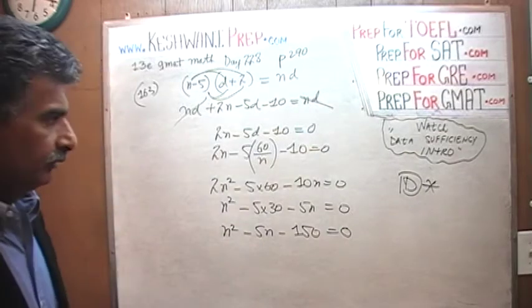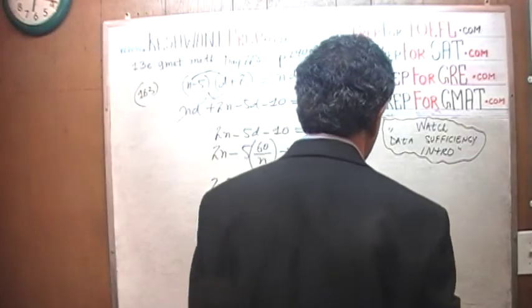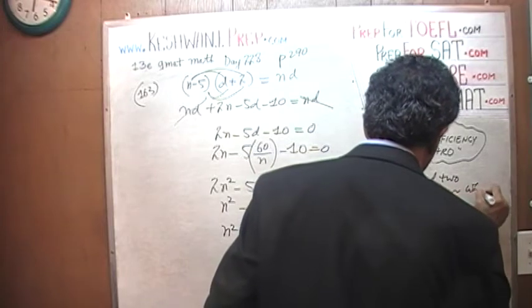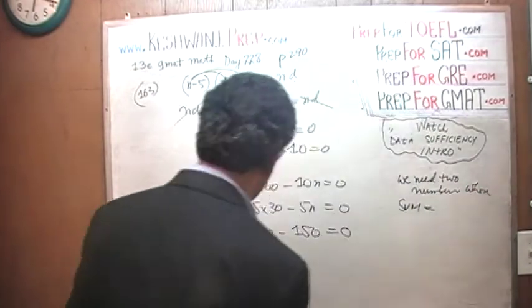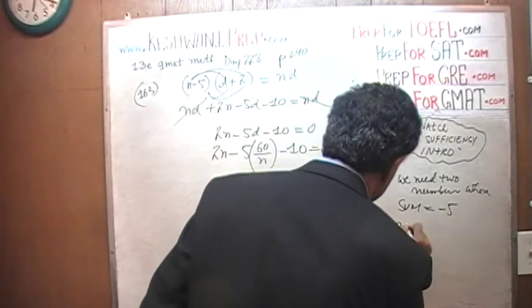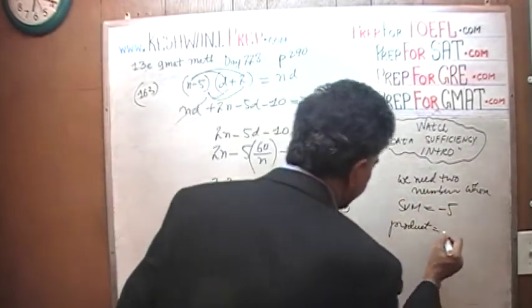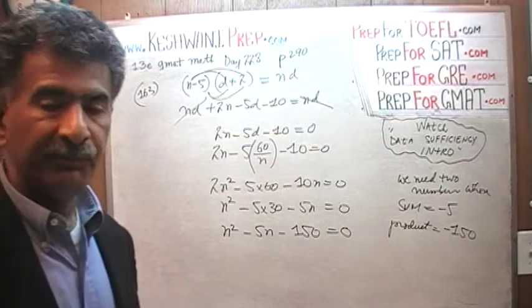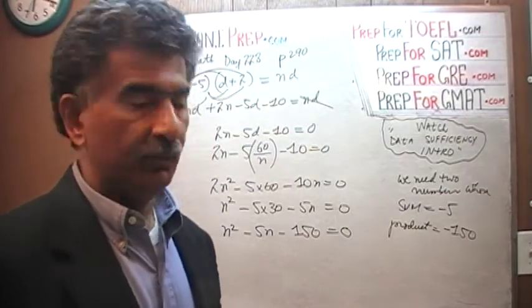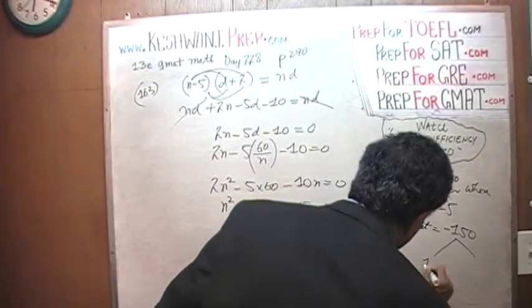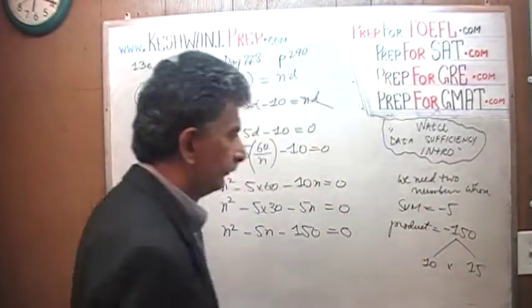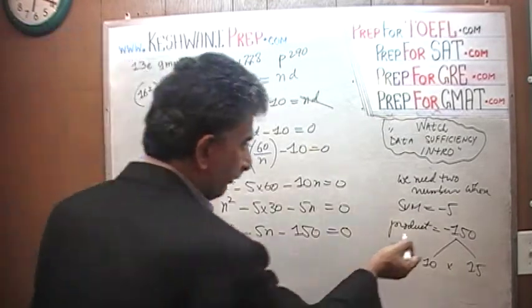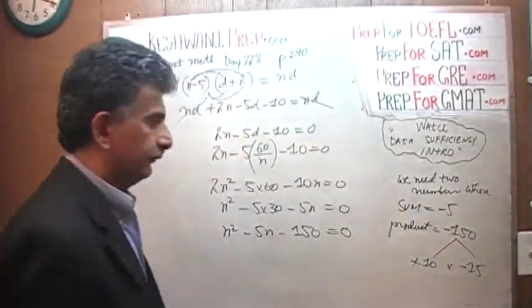So, we are looking for two numbers. We need two numbers whose sum has to be negative 5 and whose product has to be negative 150. Can you think of two such numbers? So that when we add them, we get a negative 5 and when we multiply them, we get negative 150. Well, that's pretty straightforward. Those two numbers are going to be 10 times 15. One has to be positive, one has to be negative. Which one is negative? Because we want sum to be negative, the bigger number is going to be negative. Okay, voila. Those are our two factors.